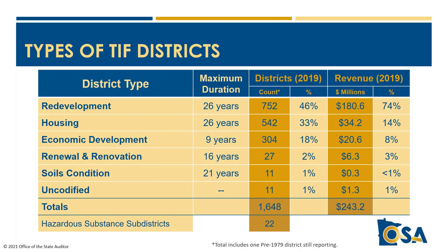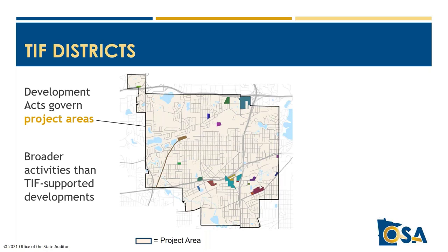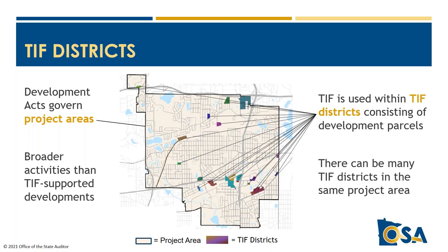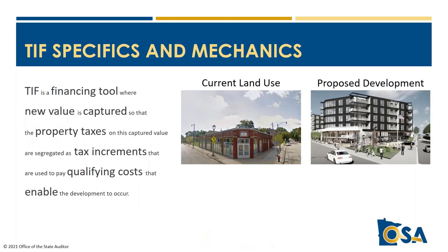The development acts govern the project areas in which development activities can occur, which are often larger areas than the individual developments supported by TIF. TIF districts consist of the parcels on which the financed development will occur. There can be many TIF districts in a single project area. Authorities often name TIF districts like TIF 1-3 or TIF 2-1, where the first number refers to the project area and the second to the TIF district within that area.